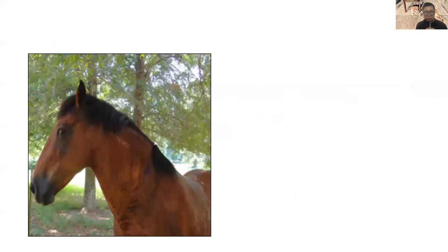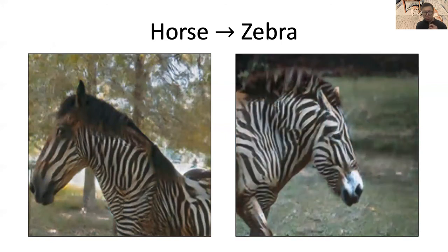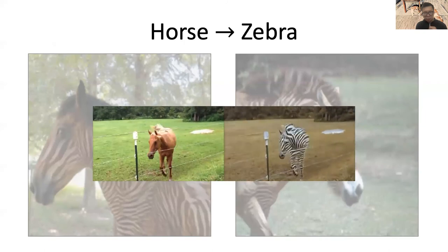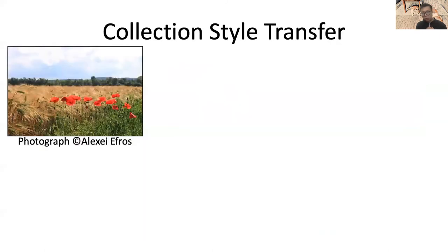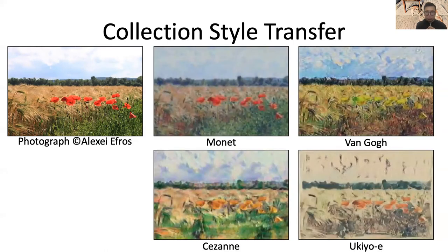Let's look at some results. CycleGAN can transform a horse into a zebra. We can also apply the model to a video. We can apply CycleGAN to different kinds of data — here is a photo taken in France, and we can translate it into different artistic styles. Ukiyo-e is an art style from Japan. In my Zoom background, I also translated my cat and dog into Ukiyo-e style.